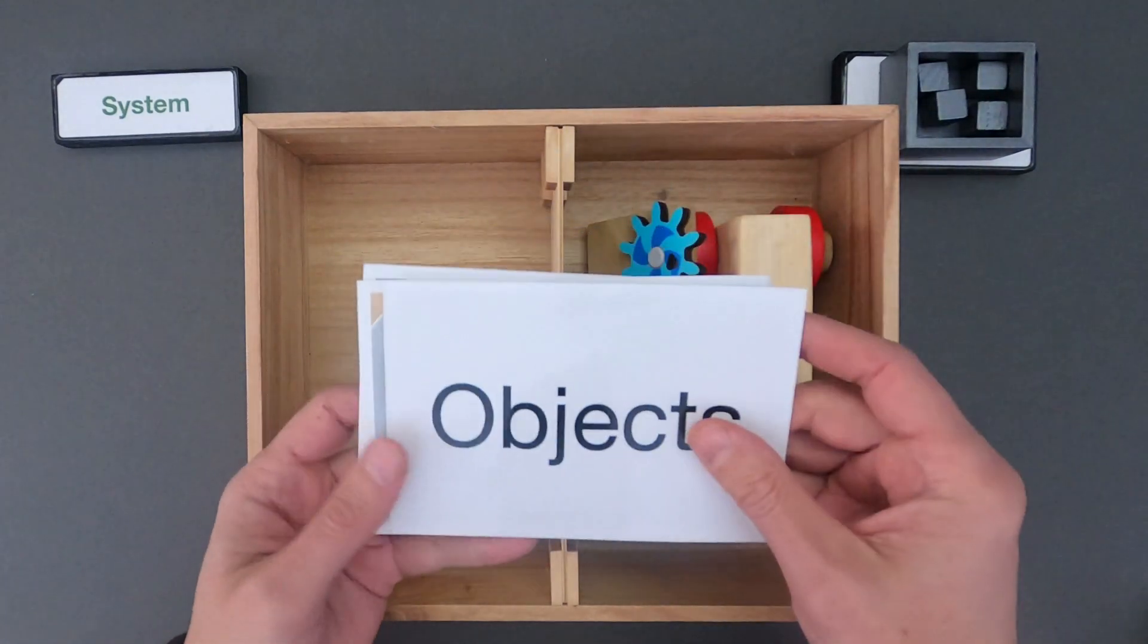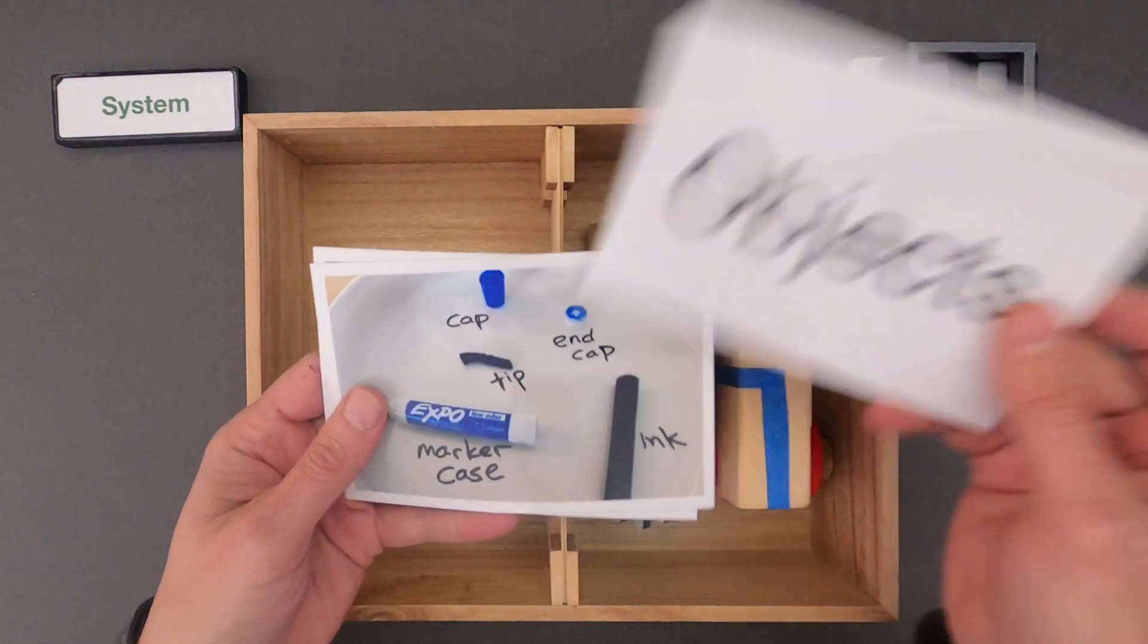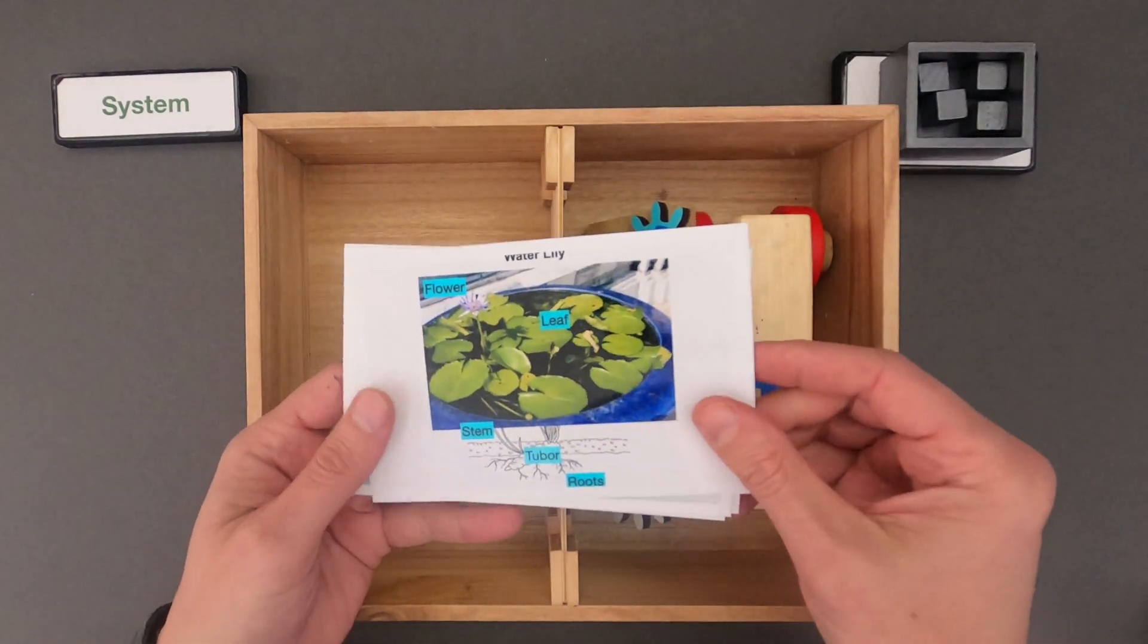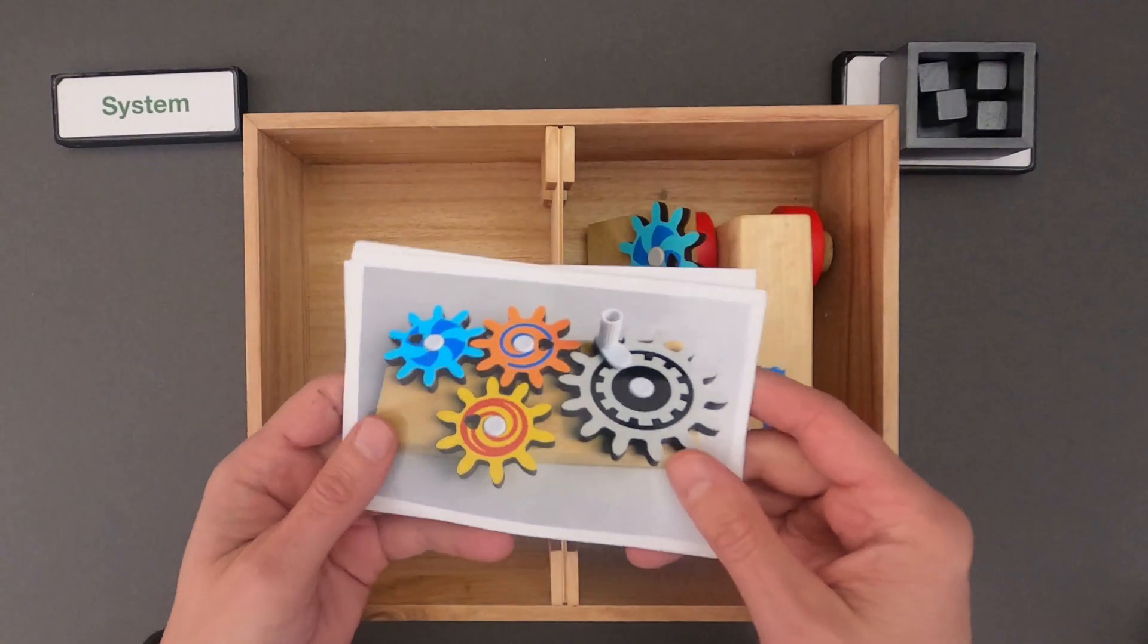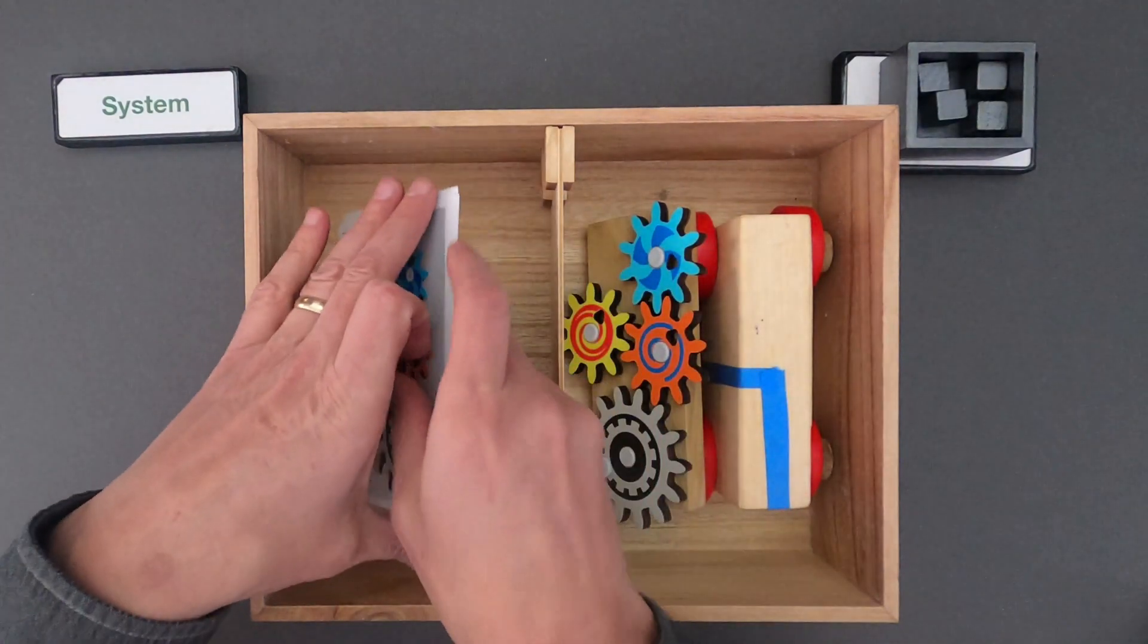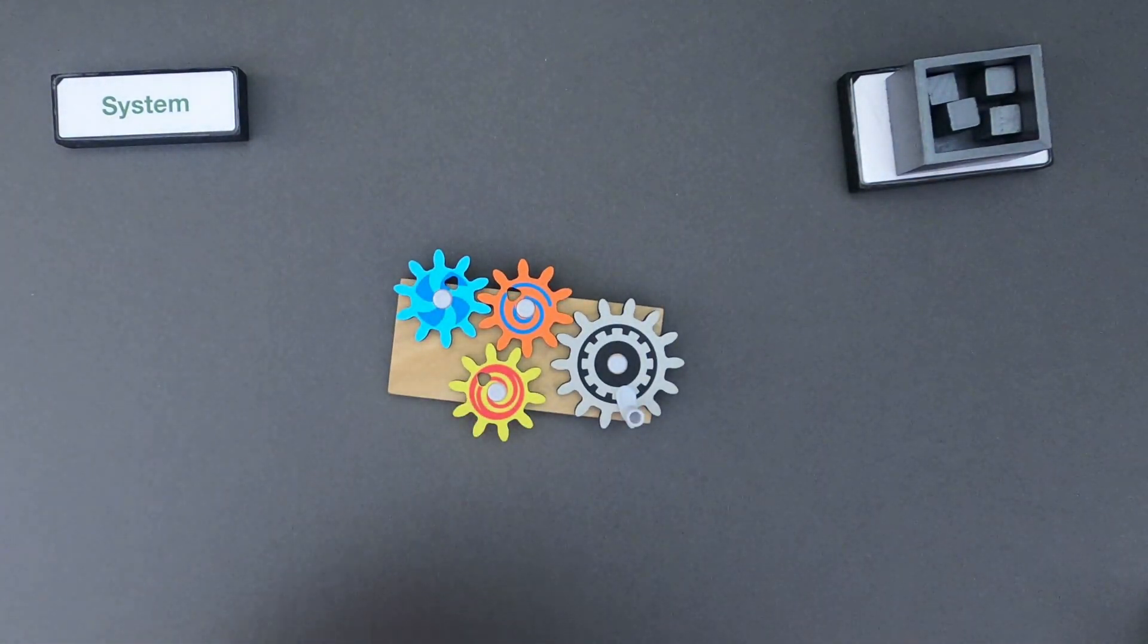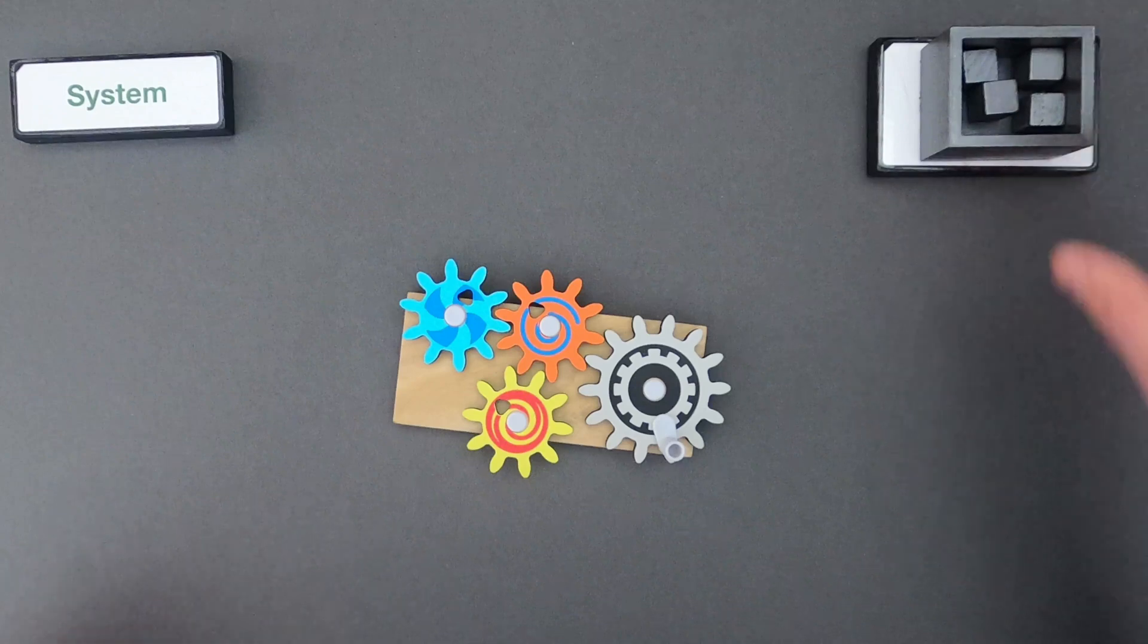After you watch this video, you should be able to do system thinking around something like a dry erase marker, or a living system like a water lily. But I'm going to show you my thinking around a simple four-gear machine, and so that will be our first system, and then you and I will do a different one when we're done. So the first thing you should do is define the system.